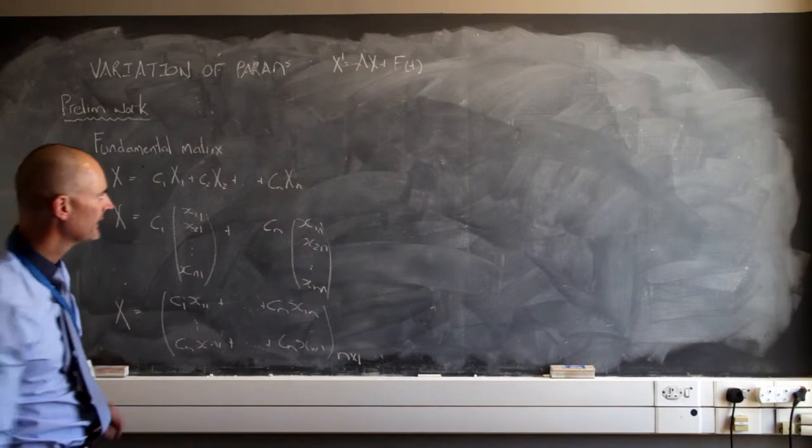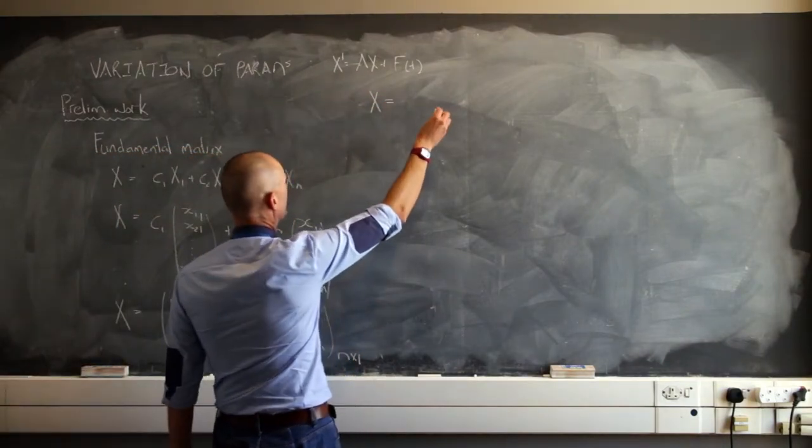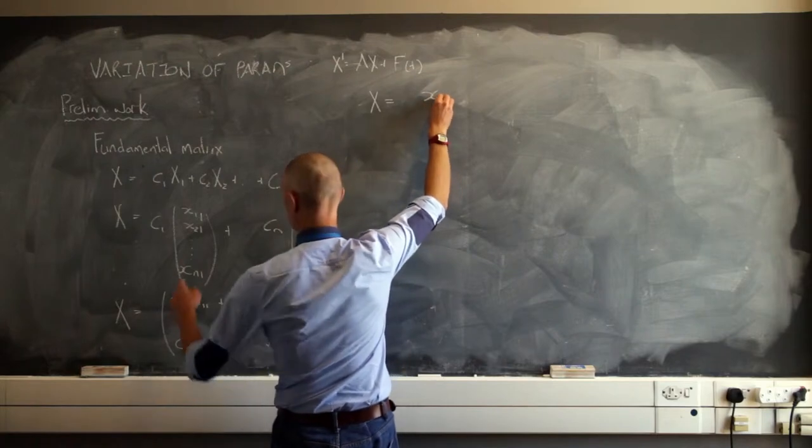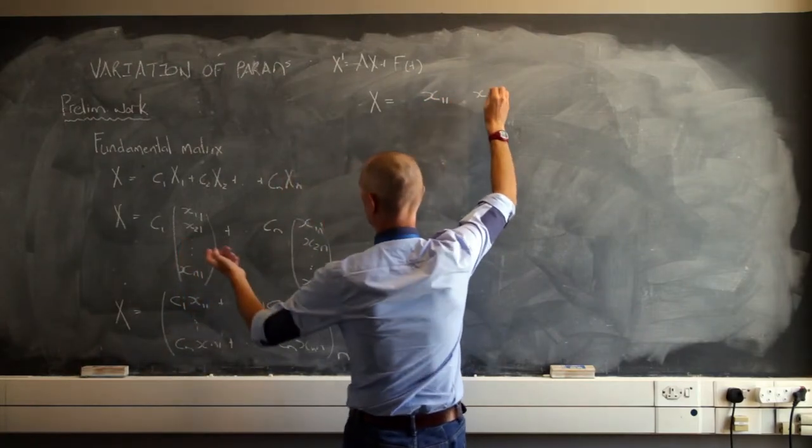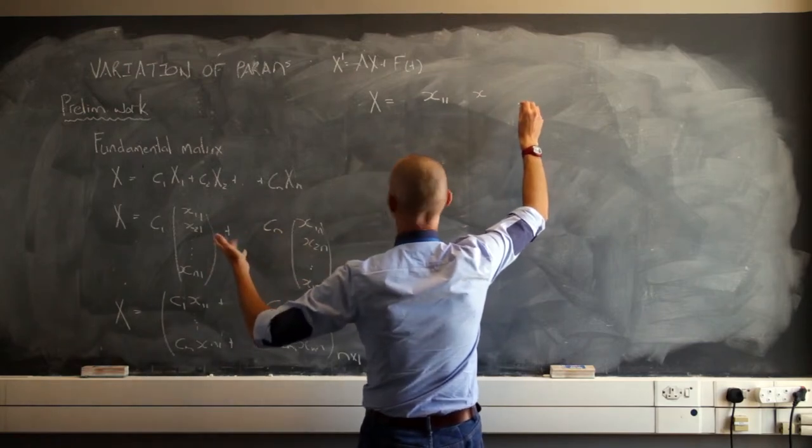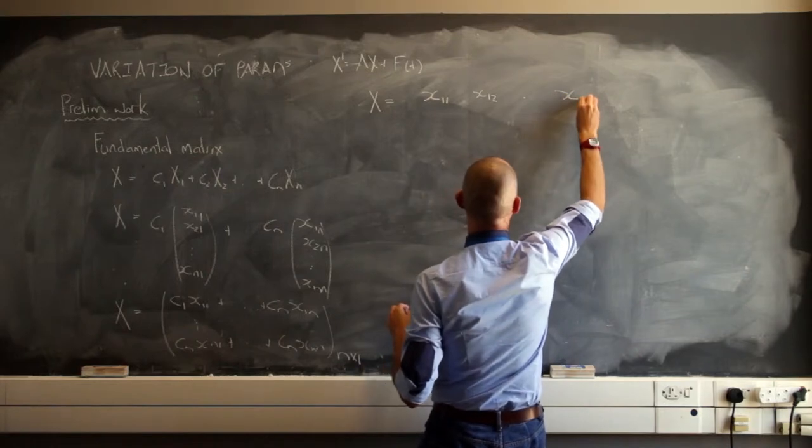I can rewrite this in another form. All of these will make sense. I can rewrite this as x sub 1,1, x sub 1,2, and eventually we're going to have x sub 1,n.